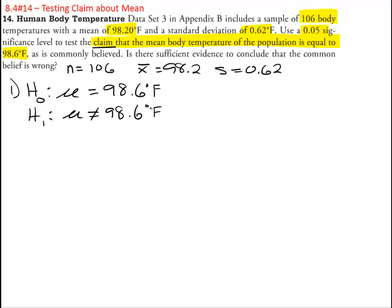Step two, select our alpha level which was already selected for us. So alpha equals 0.05.